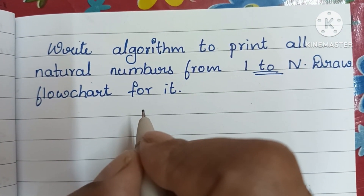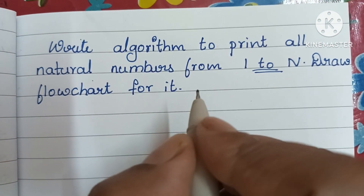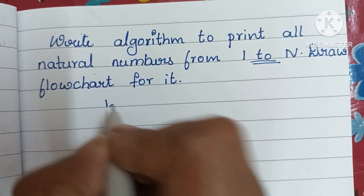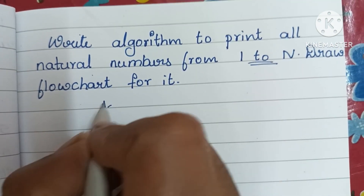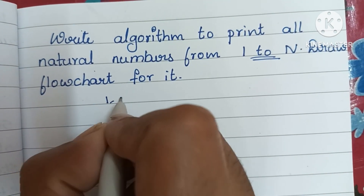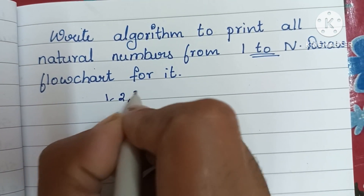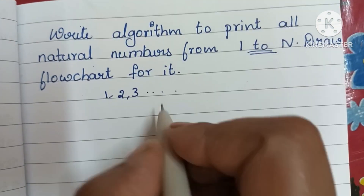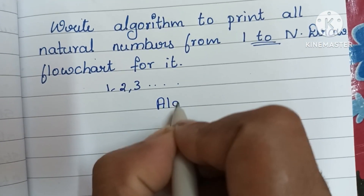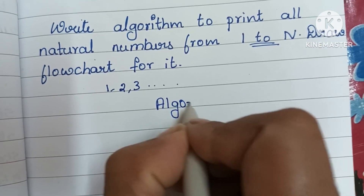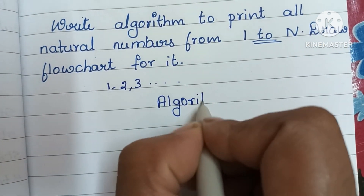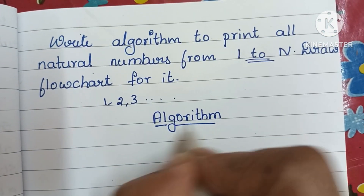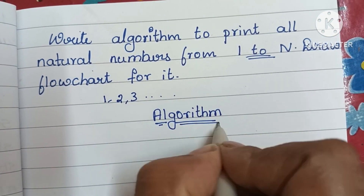What is a natural number? A natural number is a whole positive number starting from 1, 2, 3 and so on. First we are going to write the algorithm. An algorithm is a step-by-step process to solve a problem.